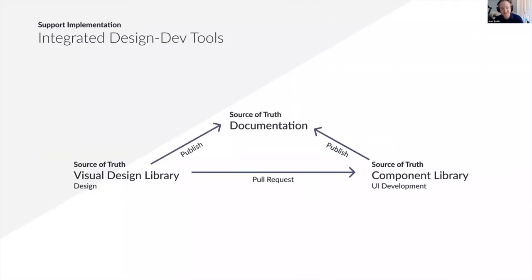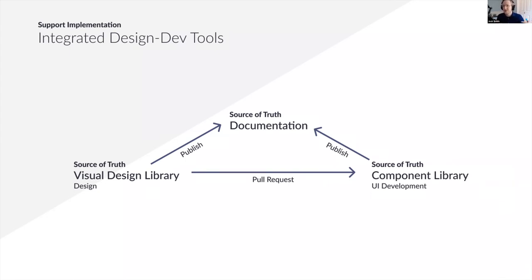When it comes to enterprise organizations and scaling, integrated design/dev tools are helpful as well. You have the visual design library that design has as their source of truth for providing blueprints or artifacts for implementation. You also have a component library that's the source of truth for developers on what bricks they can use to build. And then you need documentation, which is the reference for all the rules, the code, and the visuals. It's worth having conversations with your designers about how to integrate these — how to have confidence that there are fewer handoffs or mitigated risks of handoffs in misalignment. That's a conversation worth having if you're an enterprise organization with design.